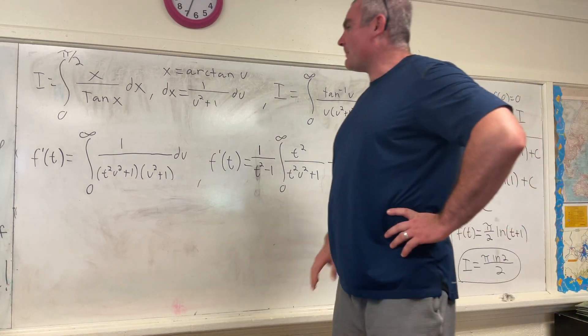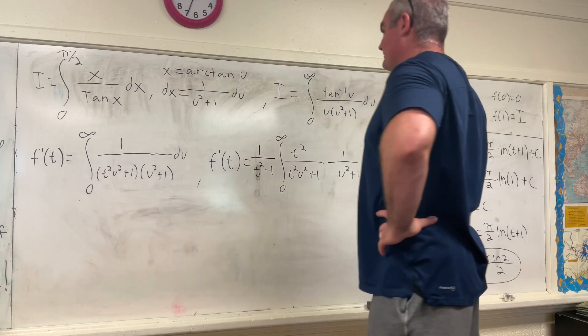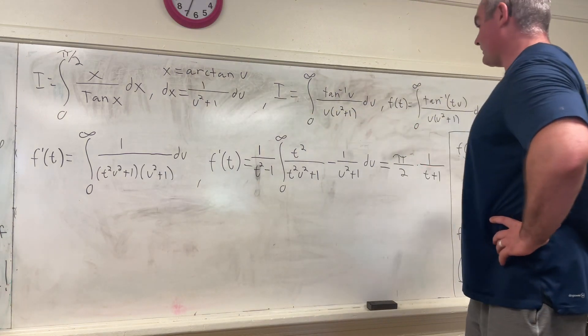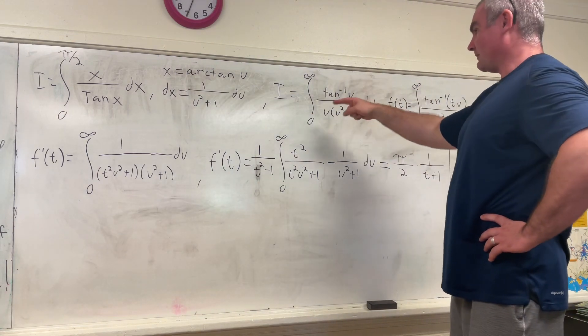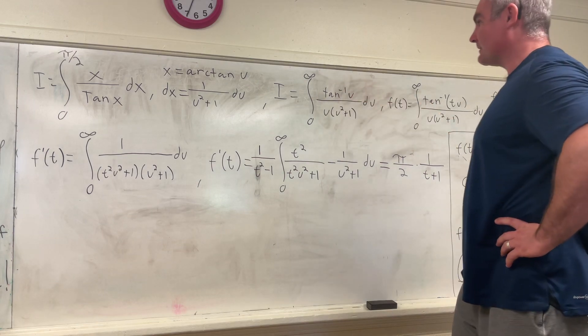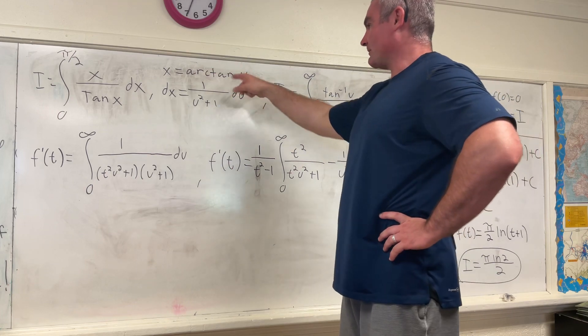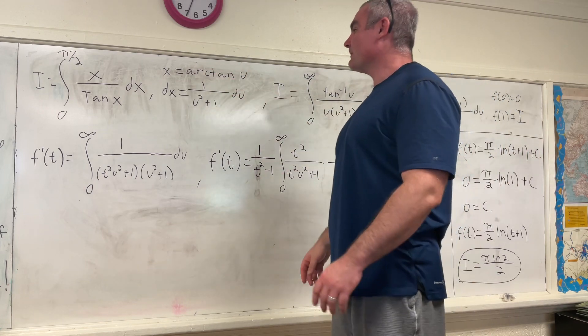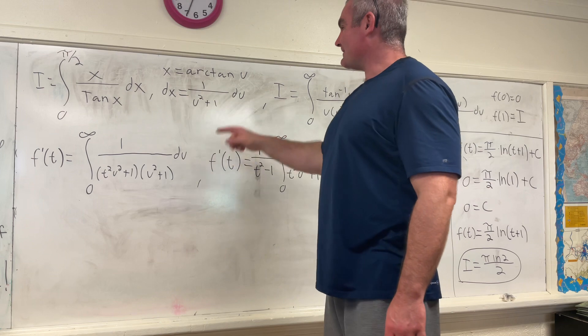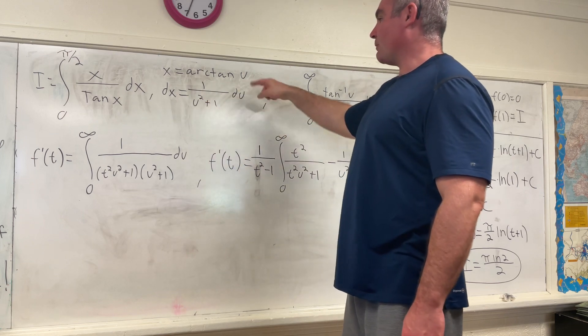So our first step is to make the substitution that x is equal to the arctangent of u. And you'll notice later on in the work I wrote, arctangent is tangent inverse. They're the same thing. I like tangent inverse. It's less writing. But anyway, x is equal to the arctangent or tangent inverse of u. Therefore, dx is equal to 1 over u squared plus 1 du.